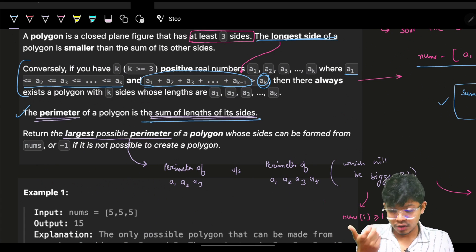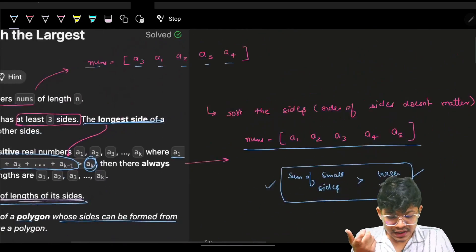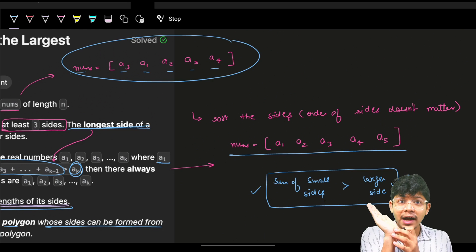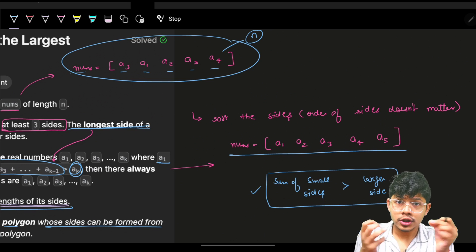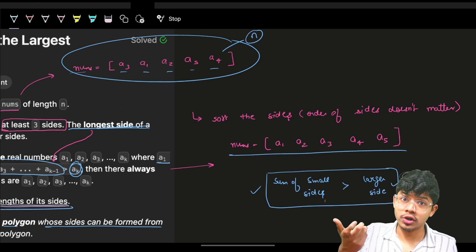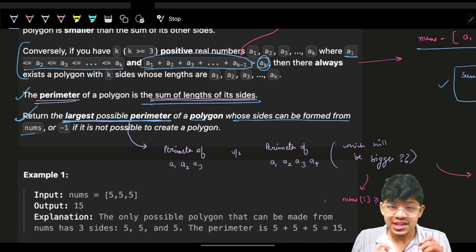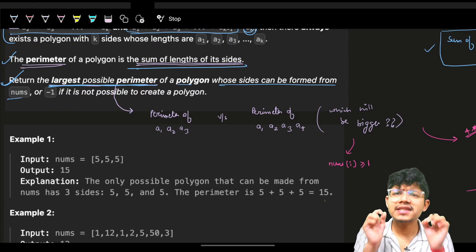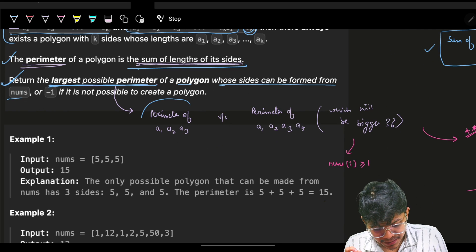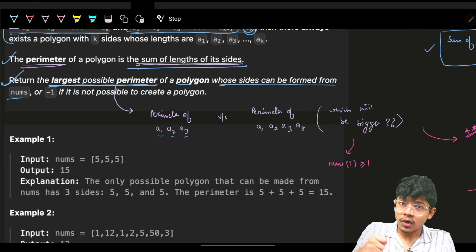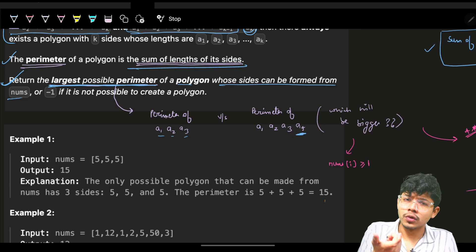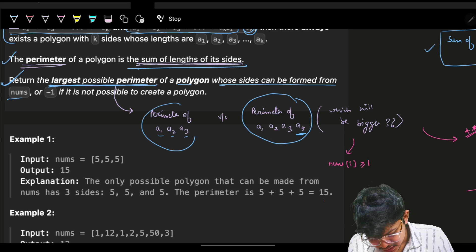We need to return the largest possible perimeter of a polygon whose sides can be formed from nums. From n elements you choose k lengths to make a k-sided polygon and return the maximum perimeter. A basic insight: if I take sides a1, a2, a3 and add one more side a4, since all side lengths are positive, the perimeter will only increase.